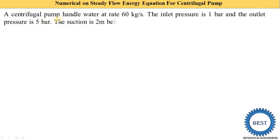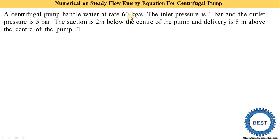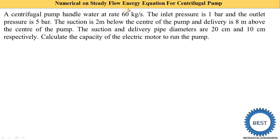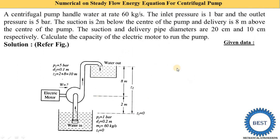A centrifugal pump handles water at a rate of 60 kg per second — that is the mass flow rate m. Since it is a steady flow process, m1 equals m2, so we consider m equal to 60 kg/s for both inlet and outlet.